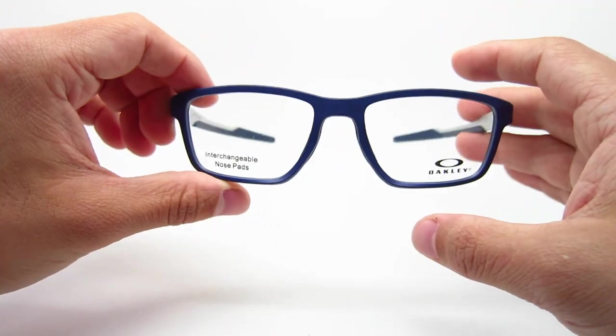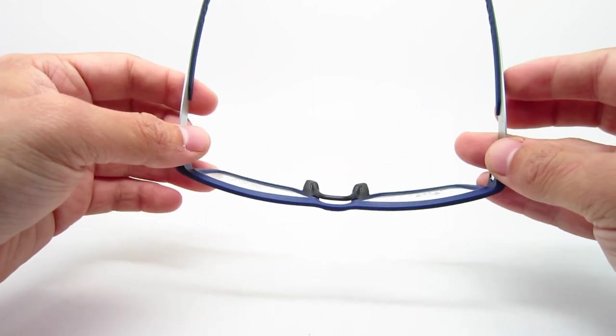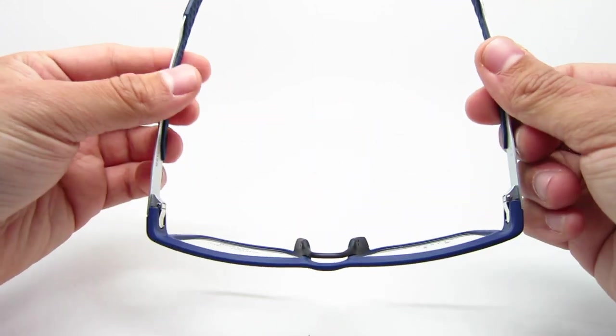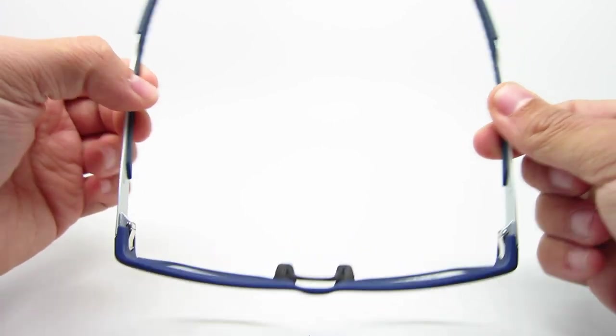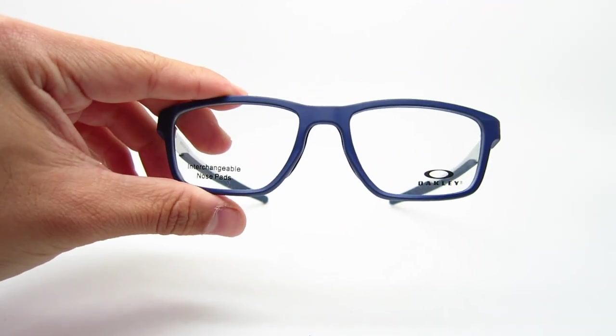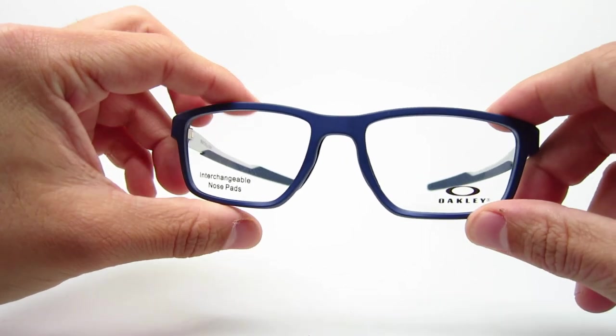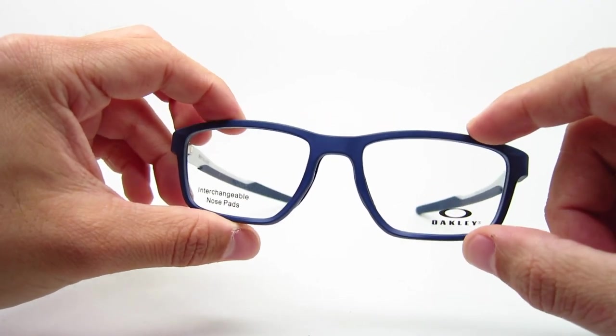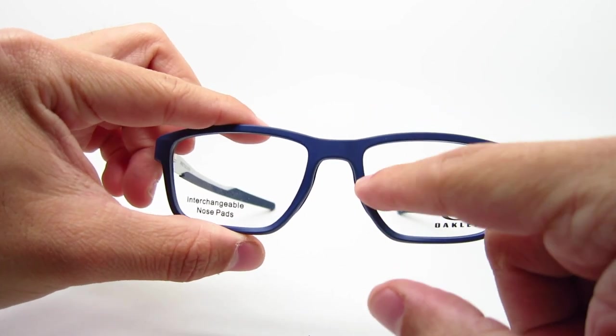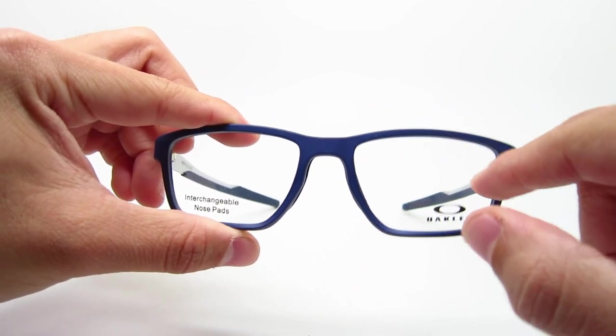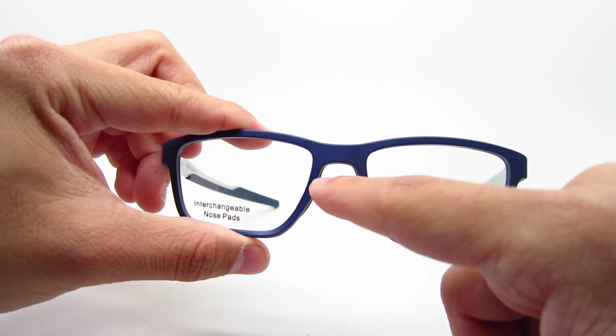So this is a men's frame. It does kind of bow out a little bit, so it is a little bit stretchable. It is available in two different sizes. This one is the 53. It also comes in a 55 size. The 53 is like the medium. So it's going to be 53mm lens width, 17mm bridge.